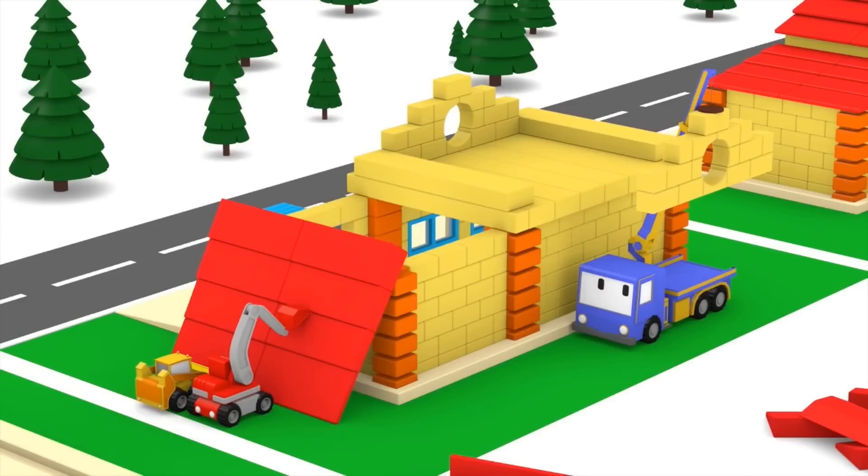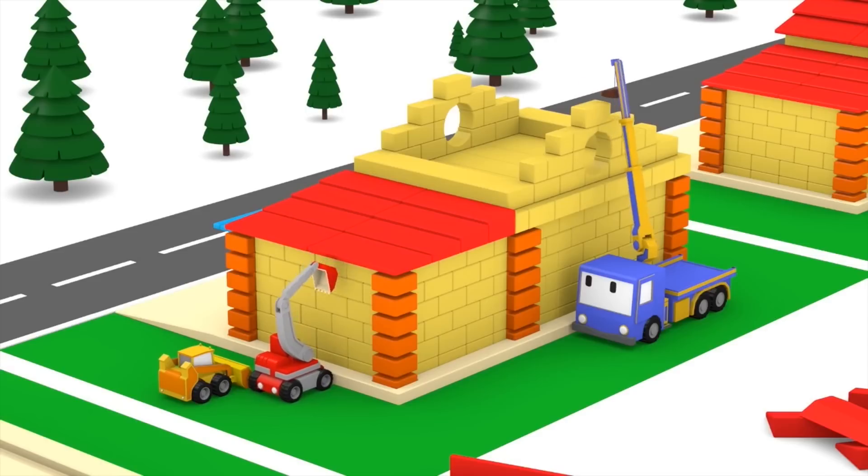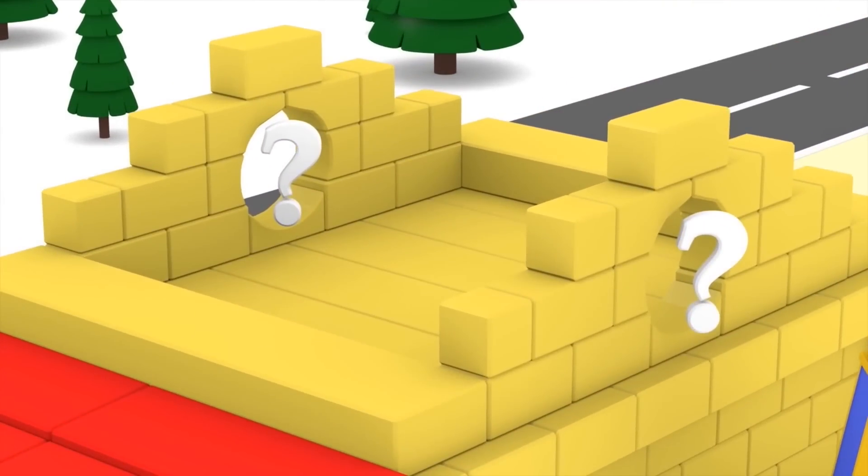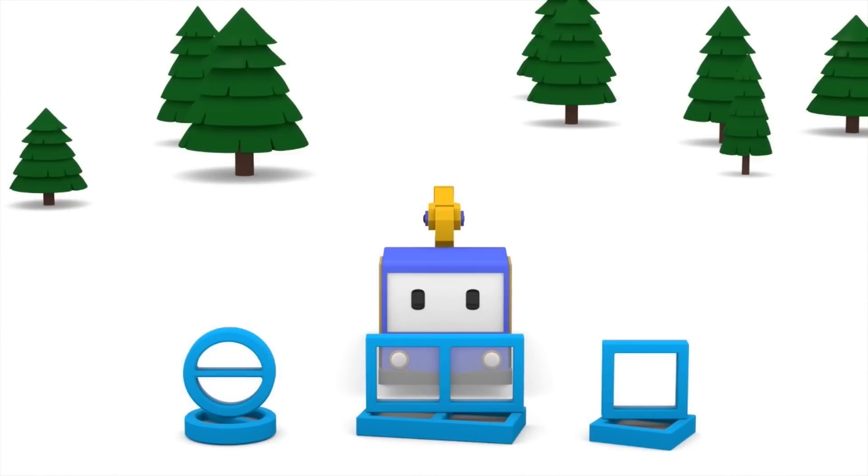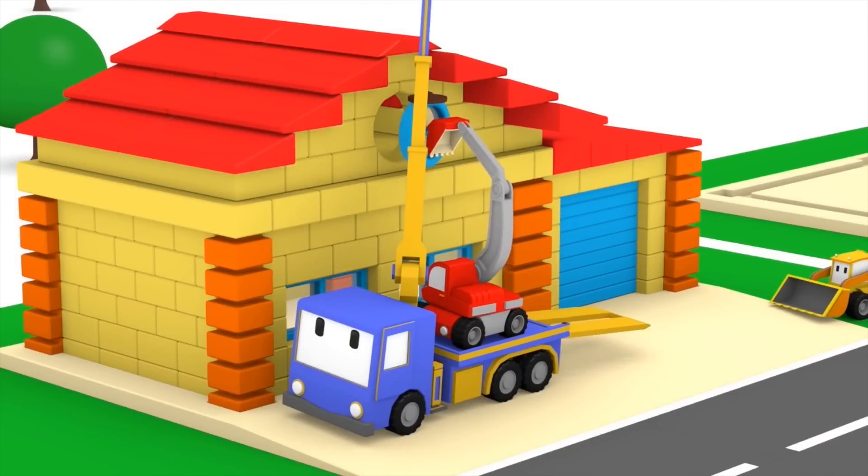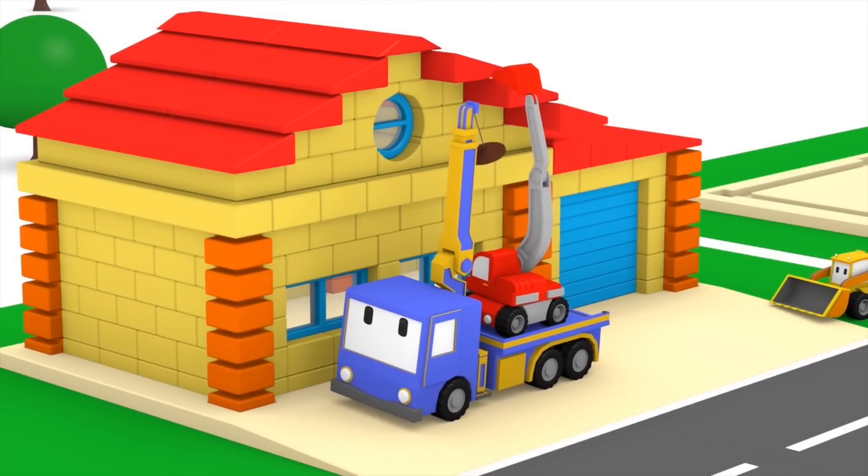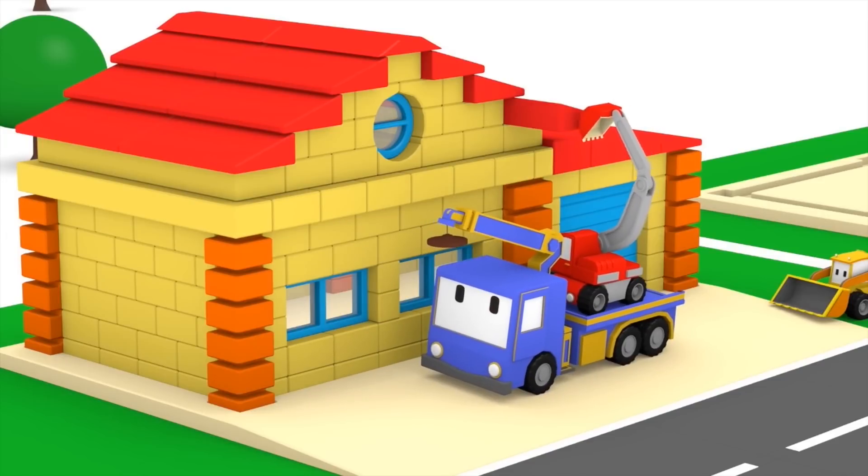Now it's time to add the roof! Uh oh! Looks like something is missing again! We need more windows! But this time we need a different shape! The square? No! The rectangle? No! How about the circle? Perfect! Ed and Charlie are almost done! Great job guys! All finished! What a nice house!